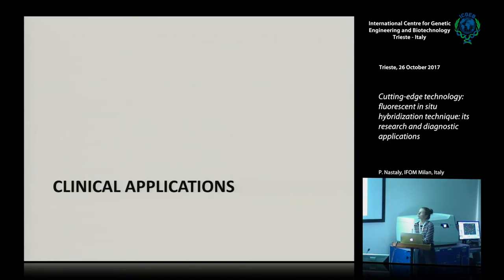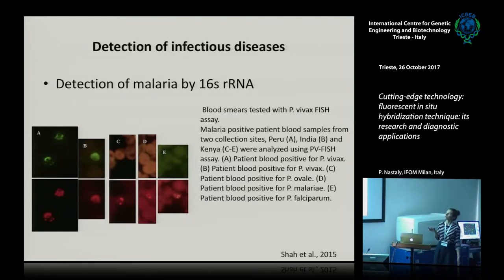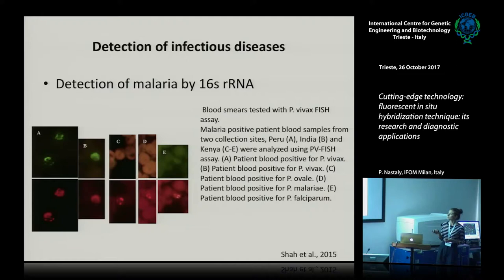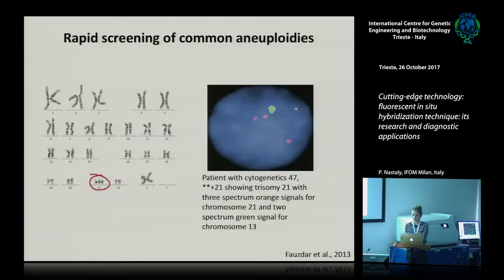Now I would like to show you some clinical applications from both the literature and my own experience. Currently malaria is diagnosed using Giemsa staining, which is a chromogenic method that is not very specific. This paper proposed that malaria can also be diagnosed using FISH probes in different patients, and the method recognizes different species of malaria.